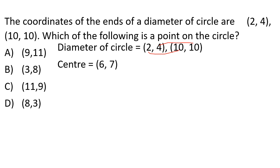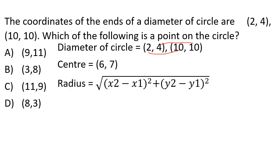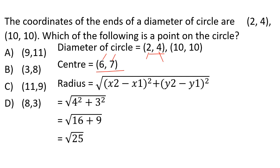Now the radius is calculated using the distance formula: √[(x2-x1)² + (y2-y1)²]. Using the center (6,7) and endpoint (2,4): radius = √[(2-6)² + (4-7)²] = √[16 + 9] = √25 = 5. We then check which given option point lies on the circle at this radius from the center.